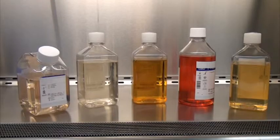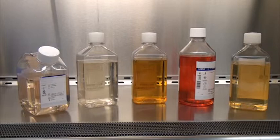The next critical parameter is media compatibility. Culture media can considerably affect transfection efficiency. Freestyle CHO-S cells were adapted to 5 representative growth media. Cells were transfected on the same day with a plasmid encoding a human IgG1 construct using the Transit Pro and ProBoost reagent. Titers varied significantly, supporting the importance of media formulation on protein expression.